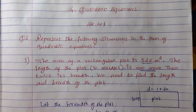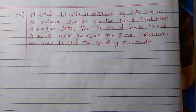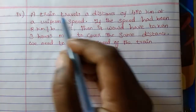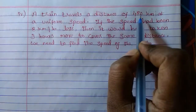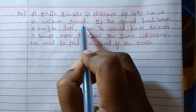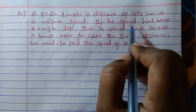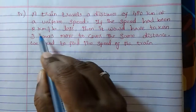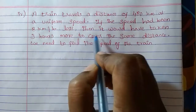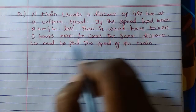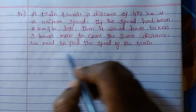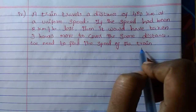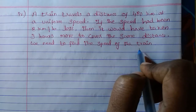In this video we will see the fourth part of this sum. The fourth part is: a train travels a distance of 480 km at a uniform speed. If the speed had been 8 km per hour less, then it would have taken 3 hours more to cover the same distance. We need to find the speed of the train.